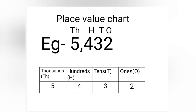See, example 5432. What is the place value of 2? Two ones, so it is written under the ones column. What is the place value of 3? Three tens, so it is written under the tens column. What is the place value of 4? Hundreds, so it is written under the hundreds column. What is the place value of 5? Thousands, so five is written under the thousands column. This is how we write numbers according to their place values in the place value chart.